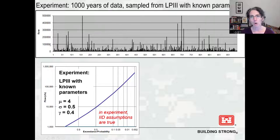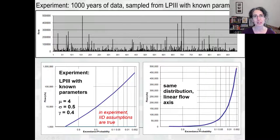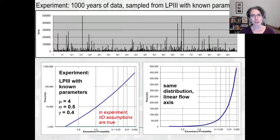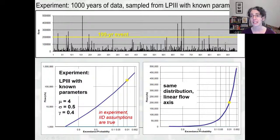Since I've plotted flow on a linear axis, I've redrawn the probability distribution on a linear axis instead of a log flow axis. On our original probability distribution, the 1% flow is here at about 200,000 CFS. Here's the 1% flow or 100-year flow plotted against the data. If you think about the 1% return period, that means this flow should be equaled or exceeded on average every 100 years.